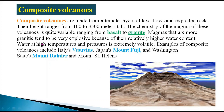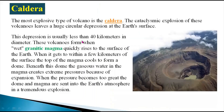Magma that is more granitic tends to be very explosive because of its relatively high water content. Water at high temperature and pressure is extremely volatile. Examples of composite volcanoes include Italy's Vesuvius and Japan's Mount Fuji, as well as Washington State's Mount Rainier and Mount St. Helens. These composite volcanoes have a height of 100 to 3,500 meters.